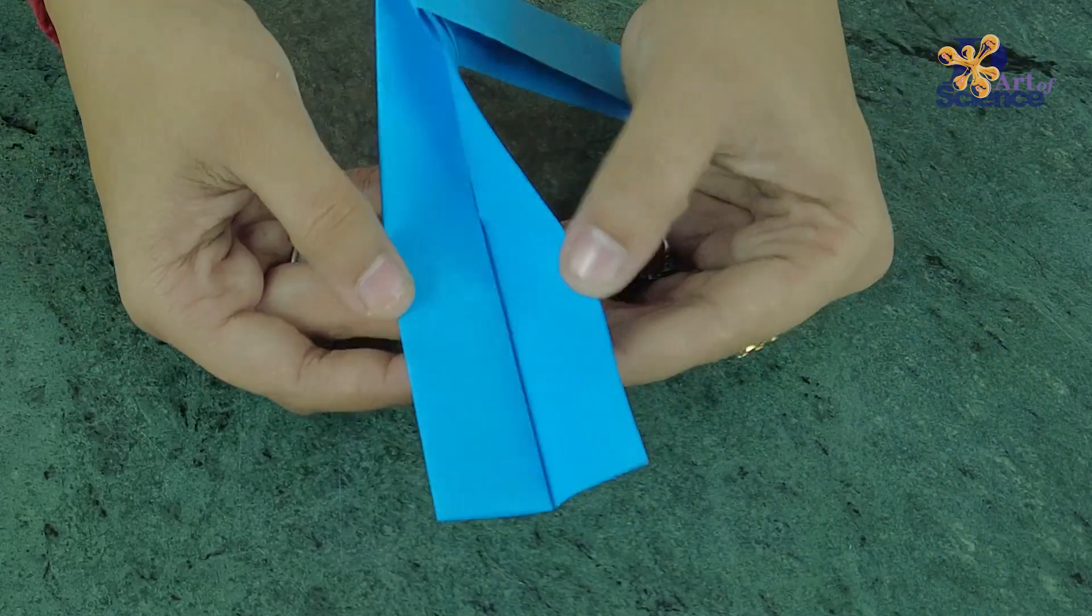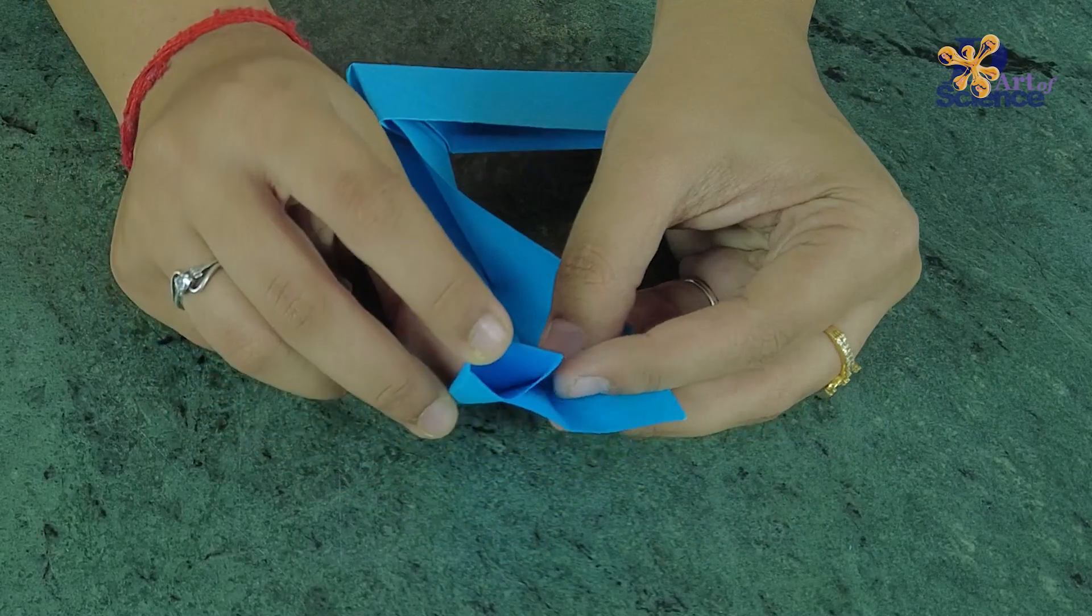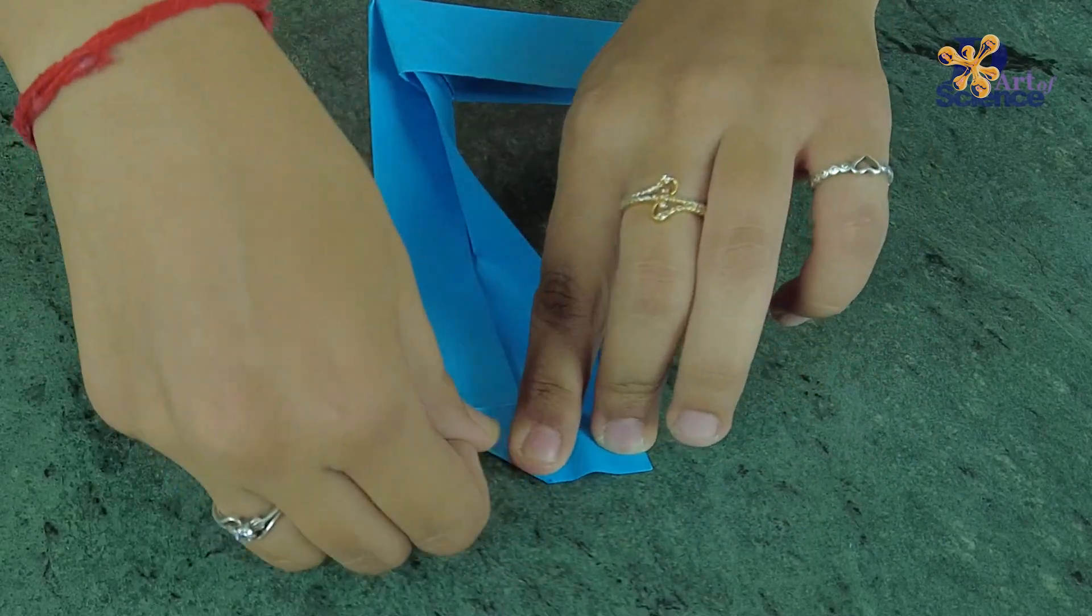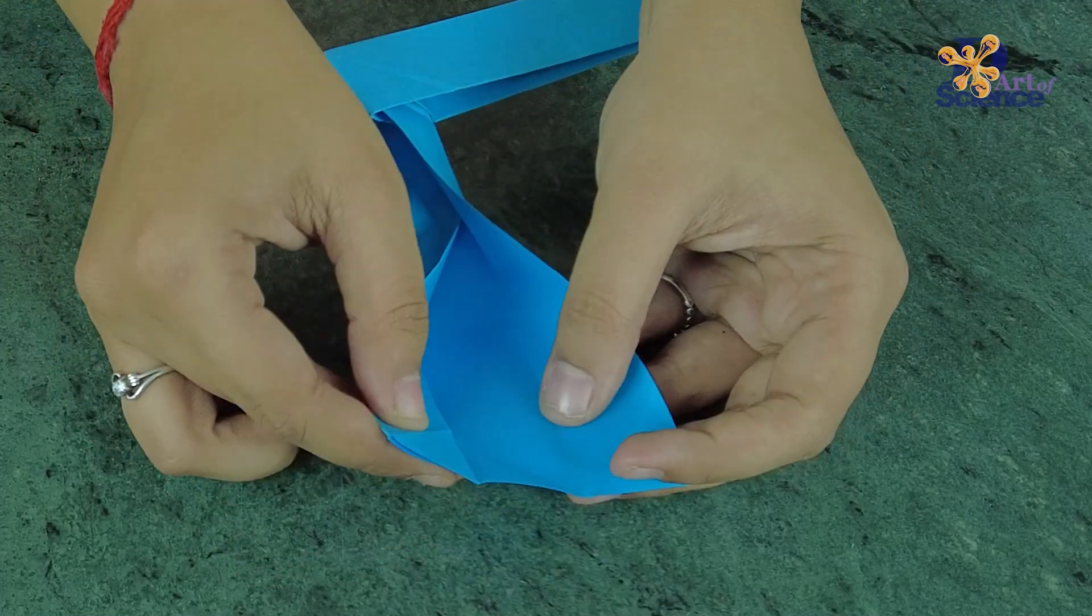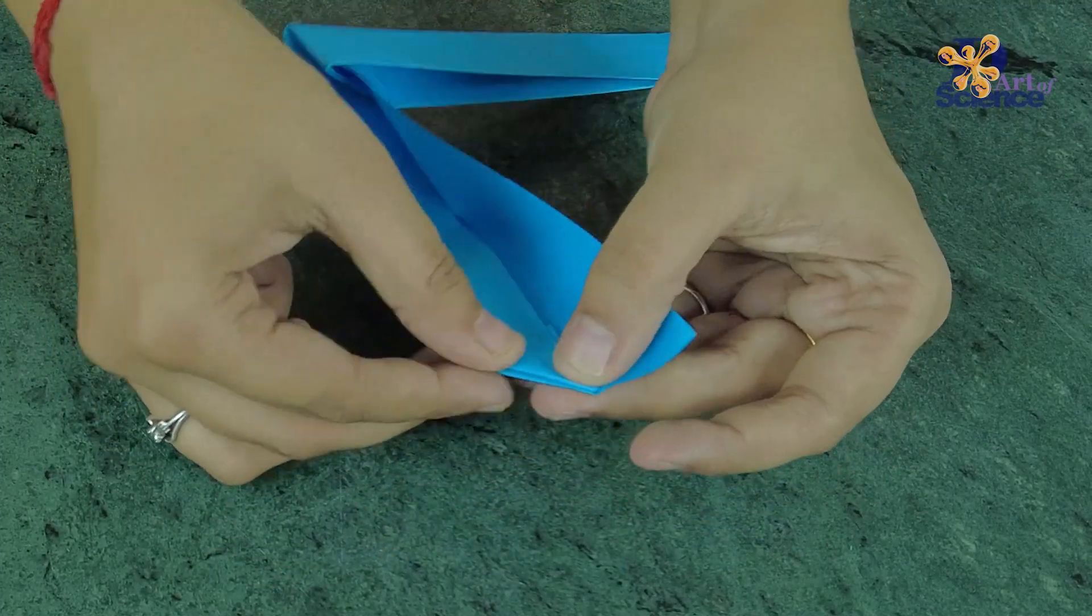This side has three strips of paper on one side and one on the other. The triangle that has to be folded inside out here is the one with three strips.